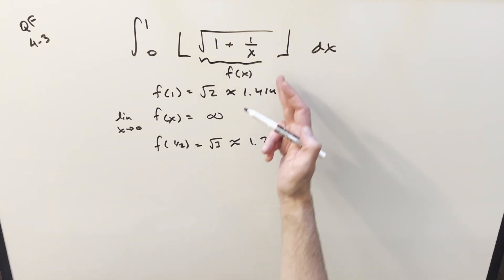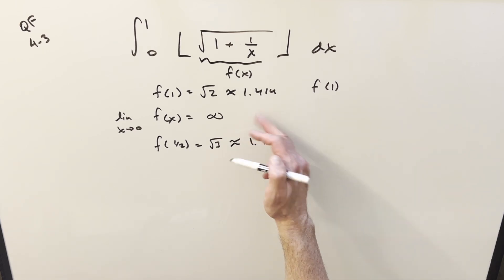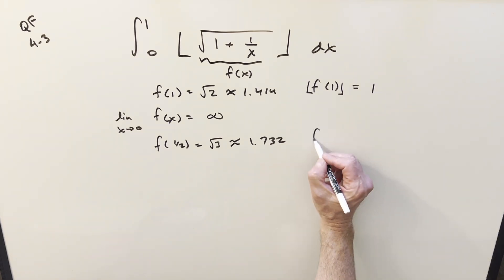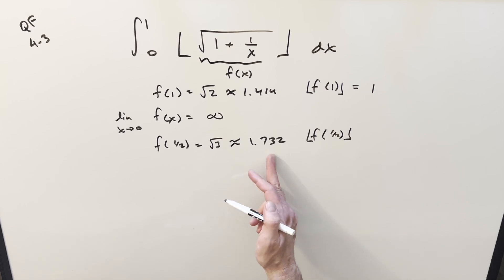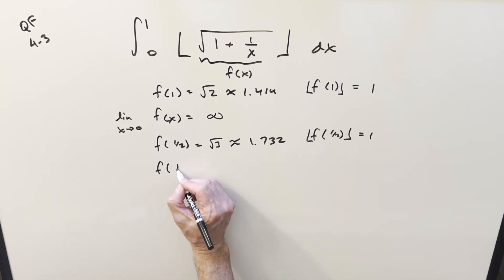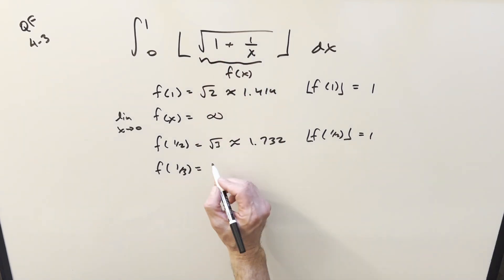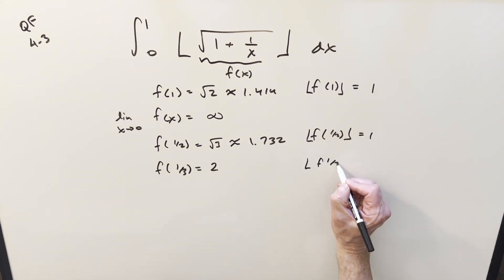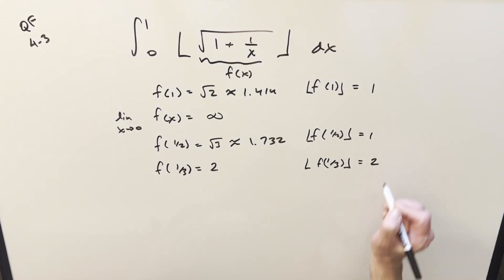This is where it gets interesting because everything is inside the floor. For f of 1, we're at 1.414 — if we take the floor of this, it rounds down to 1. The same thing is true for f of 1 half: the floor function rounds us down to 1. But for f of 1 over 3, that becomes 3 plus 1 equals 4, and the square root of 4 is 2. The floor of that is still 2 because when you're at an integer and you round down, you stay at the same integer value.